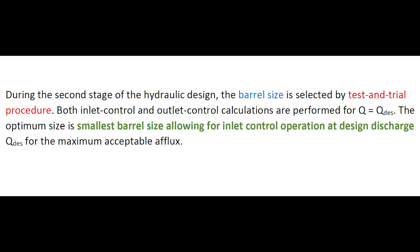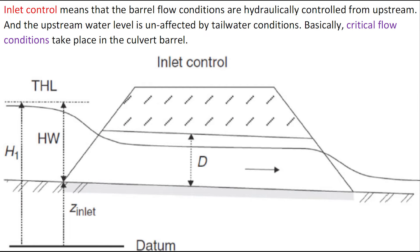During the second stage of hydraulic design, the barrel size is selected by a test and trial procedure. Both inlet control and outlet control calculations are performed for the design discharge. The optimum size is the smallest barrel size allowing for inlet control operation at the design discharge for the maximum acceptable afflux. Inlet control means that the barrel flow conditions are controlled from upstream, and the upstream water level is unaffected by the tailwater condition. Basically, critical flow conditions take place in the culvert barrel.